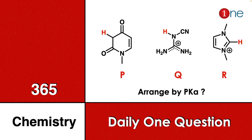Welcome to One Chemistry. This is the 365 Chemistry Series — one question for you daily. Here, three different nitrogen compounds are given: a six-membered ring with nitrogen and a diketone, a cyanide-attached diamine system, and a five-membered imidazole system.